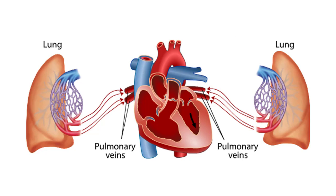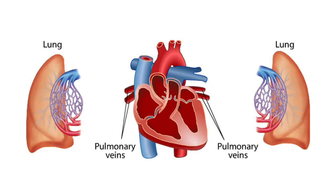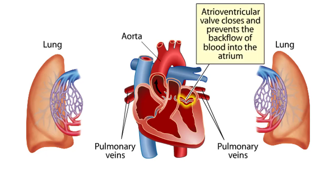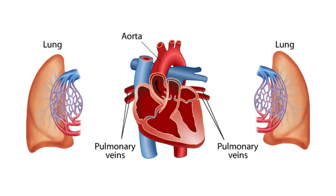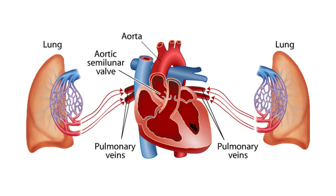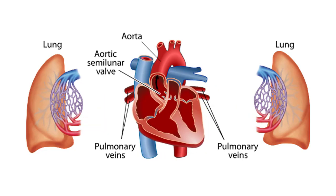After a slight delay, the ventricle contracts. The contraction forces the blood to exit into an opening that leads to the largest artery in the body, the aorta. The atrioventricular valve closes and prevents the backflow of blood into the atrium. The aorta is closed off from the left ventricle by a one-way valve, the aortic semilunar valve, which is oriented to permit the flow of blood out of the ventricle but snaps shut in response to backflow.